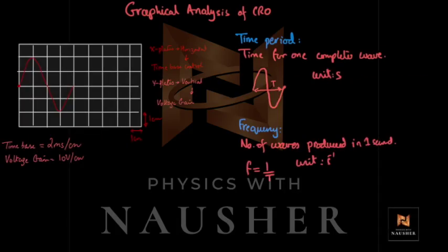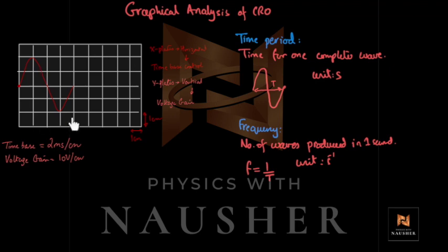Let's discuss the graphical analysis of a CRO. When you see this waveform on the screen, you know that you've applied an AC voltage on the Y plates and your time base is on. Two facts to recall: time period is the time for one complete wave, and frequency is the number of waves produced in one second — frequency is the inverse of time period. You move vertically because of your voltage gain, and you move horizontally because of your X plates, which is your time base.